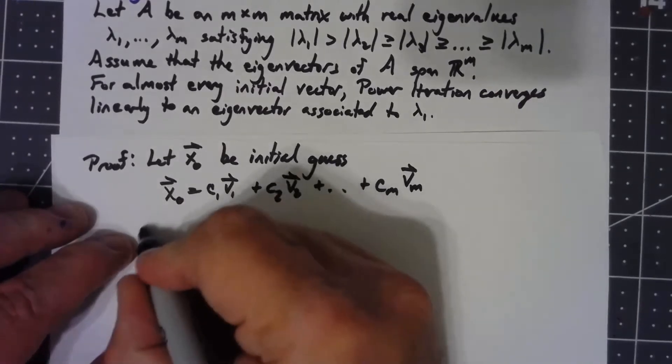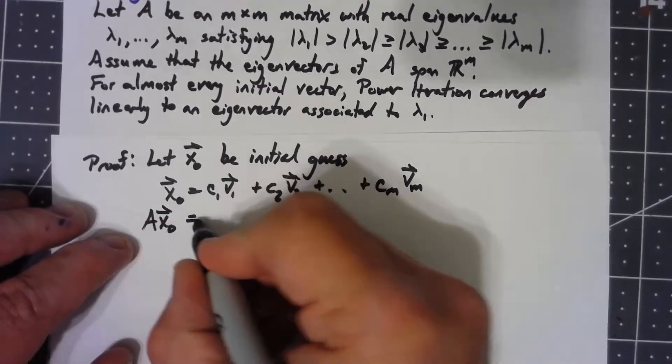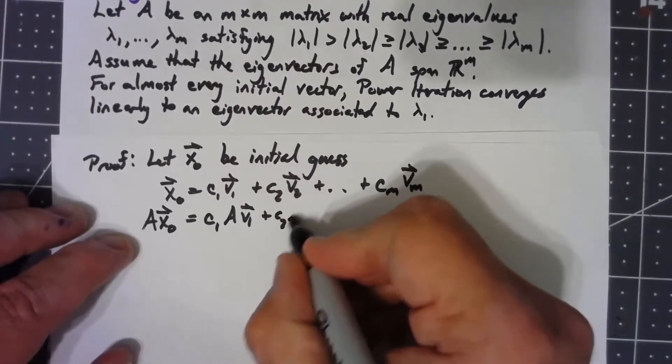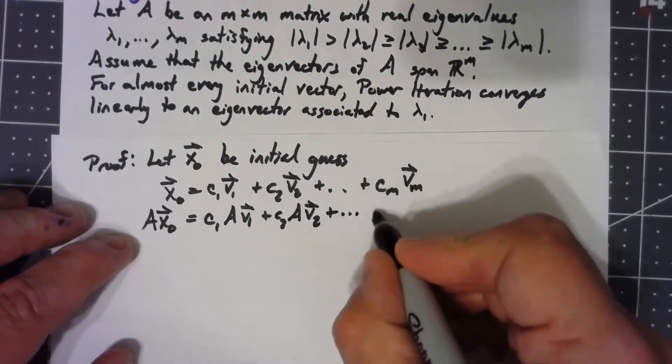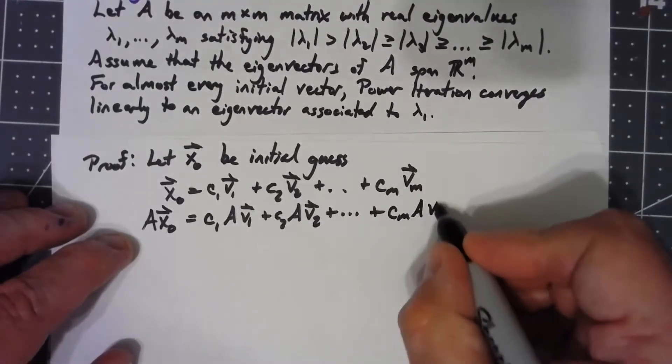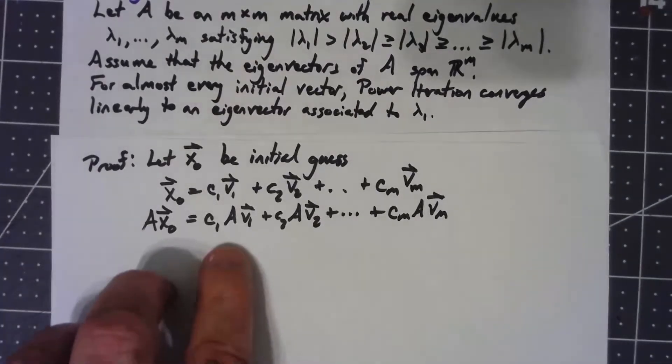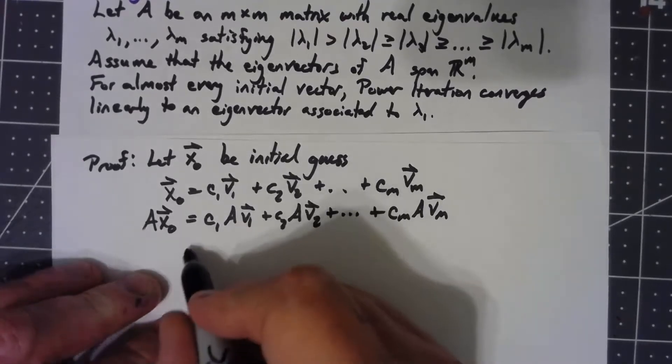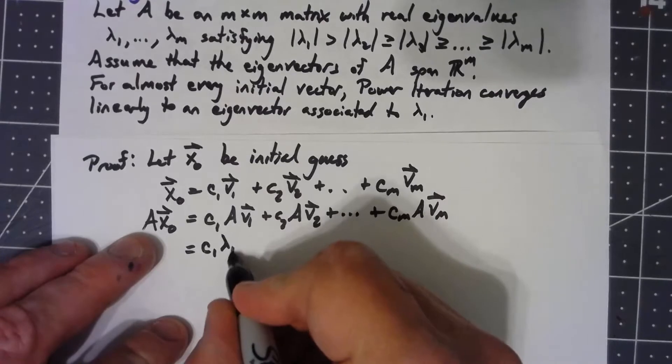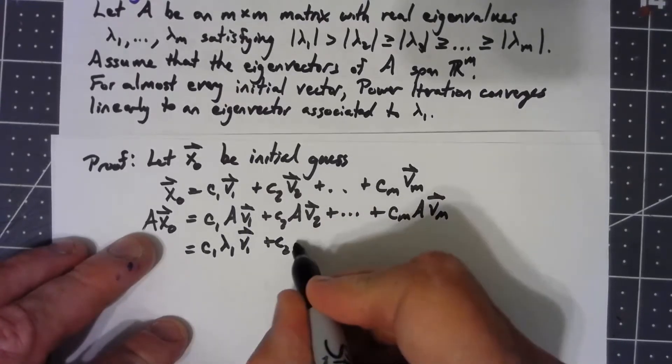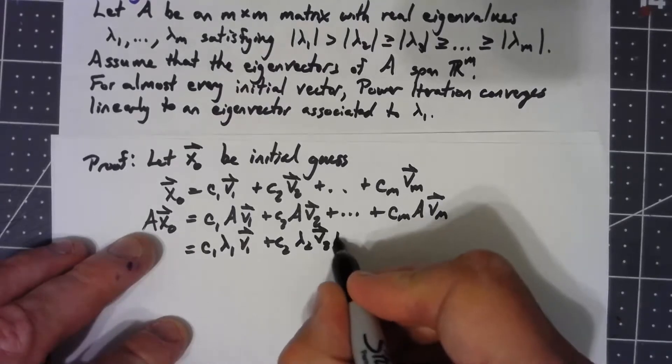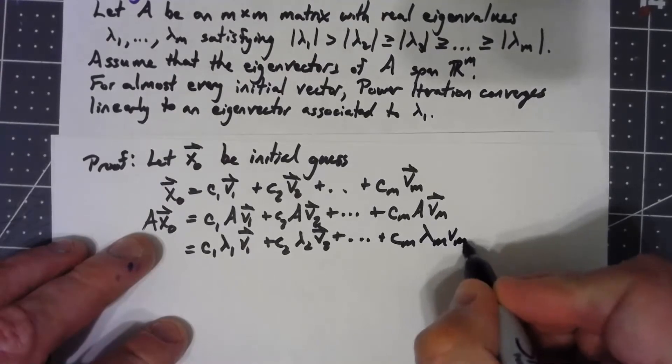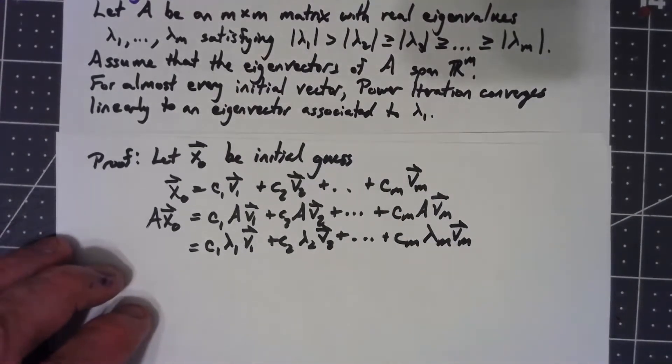What happens when I take A times x_0? That's going to give me c_1 times A times v_1 plus c_2 times A times v_2. But since these were the eigenvectors, multiplying by the matrix is the same as multiplying by the eigenvalue, so we get c_1 lambda_1 v_1 plus c_2 lambda_2 v_2 up to c_m lambda_m v_m.